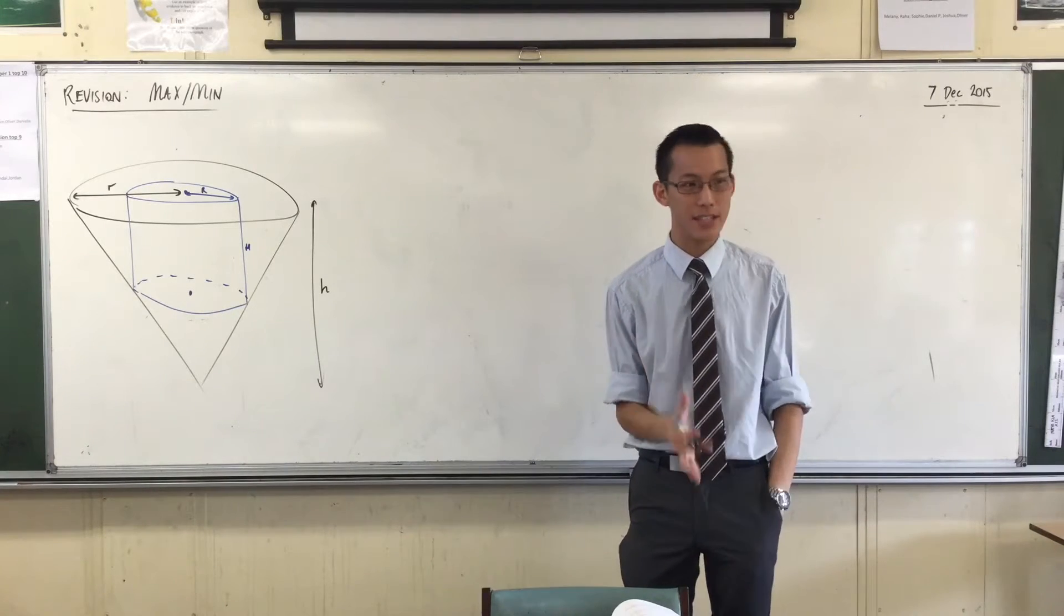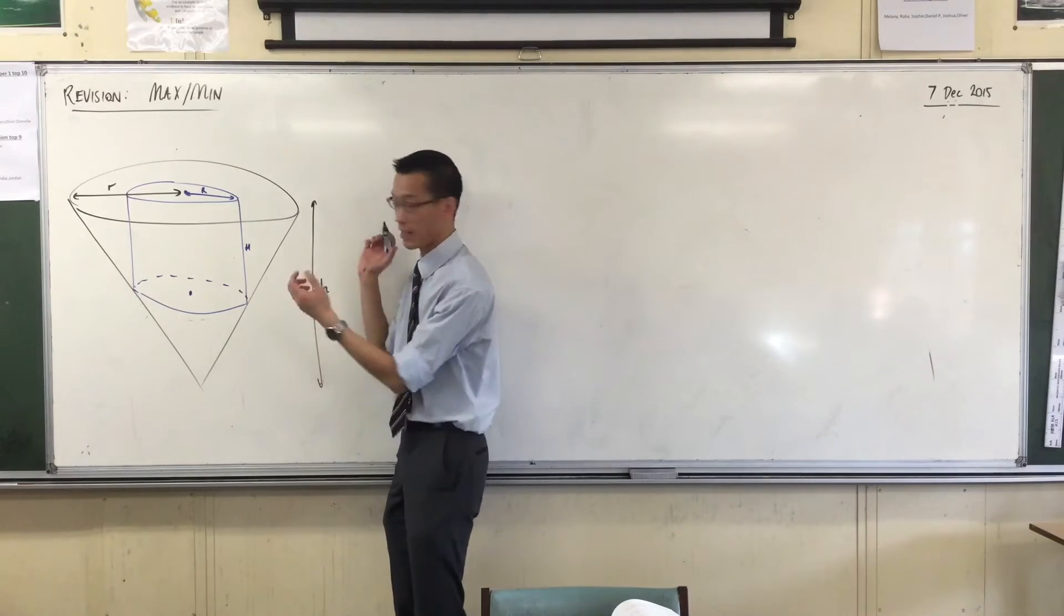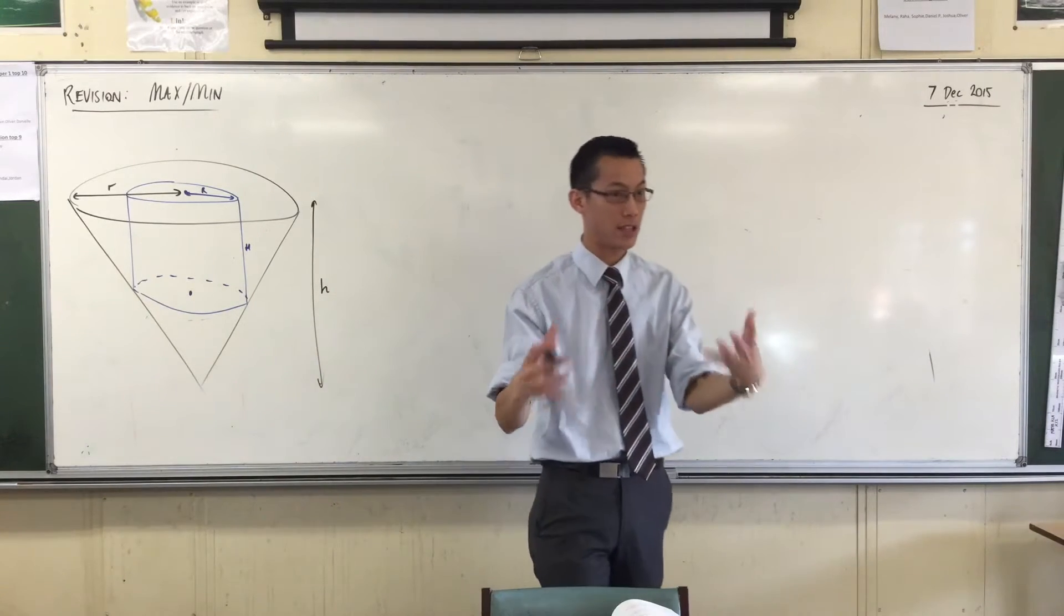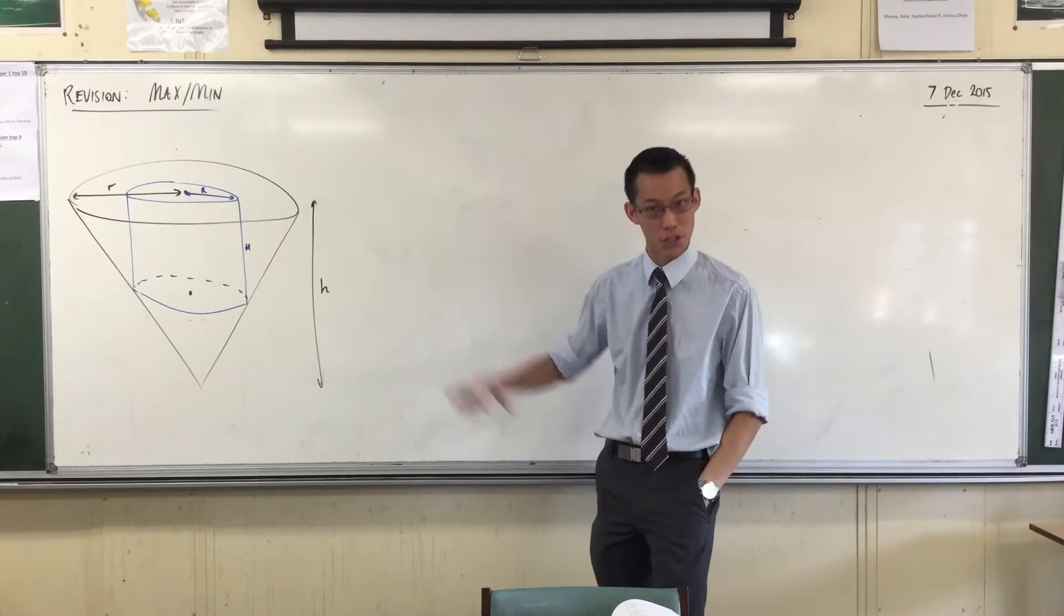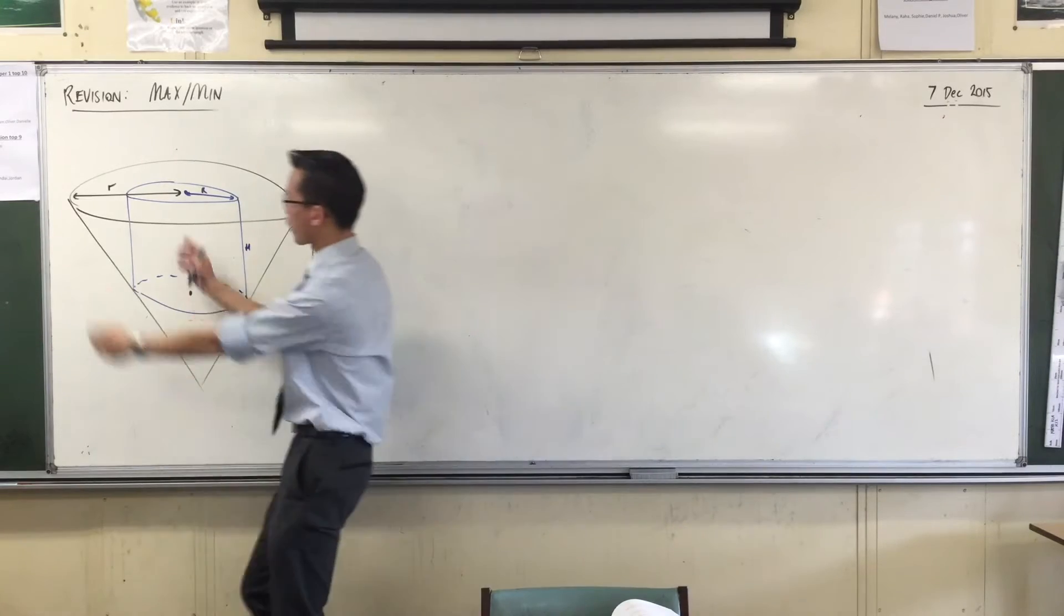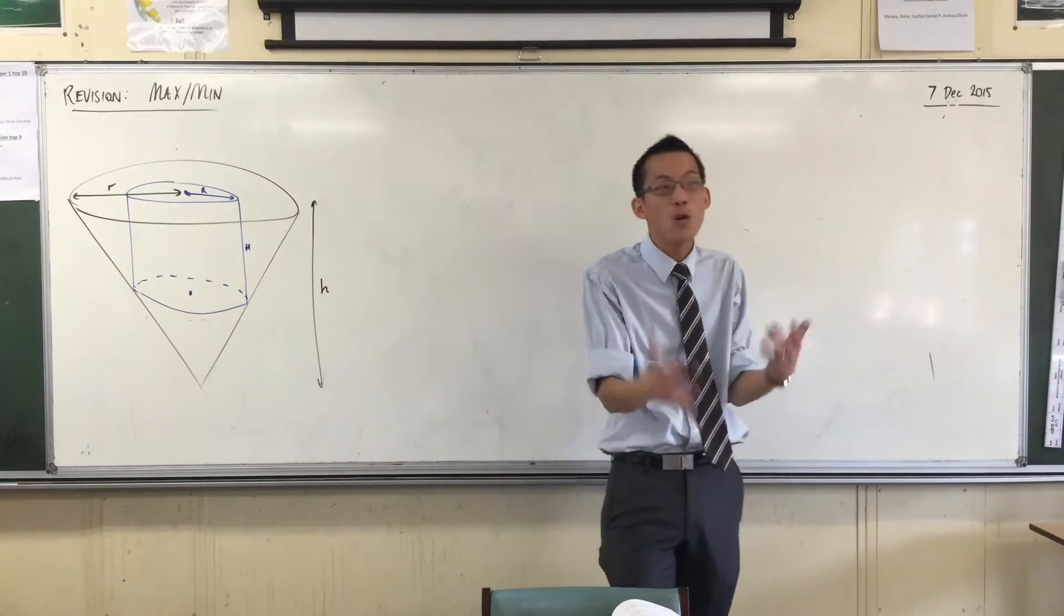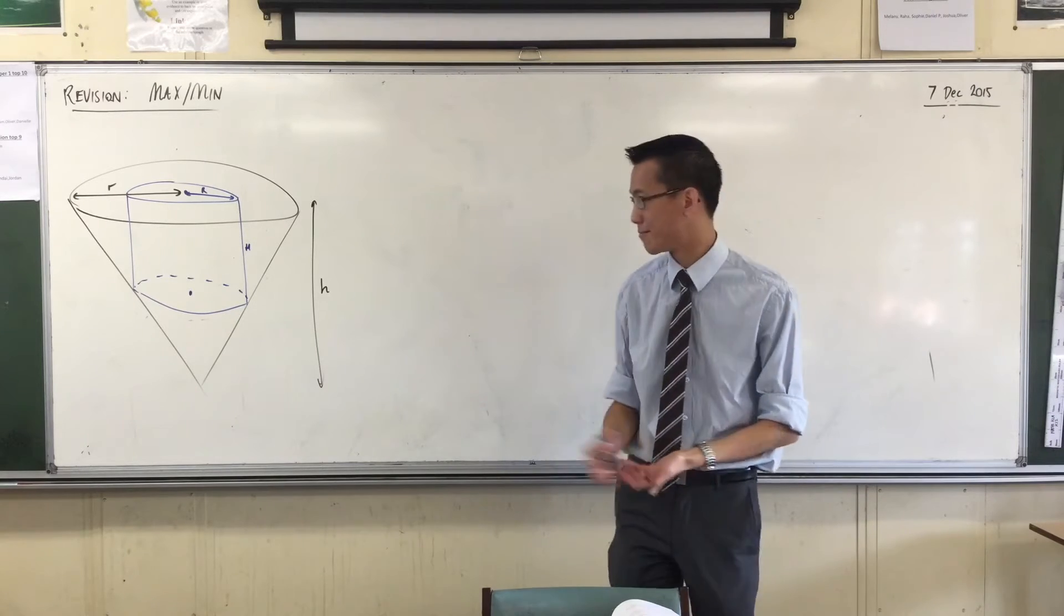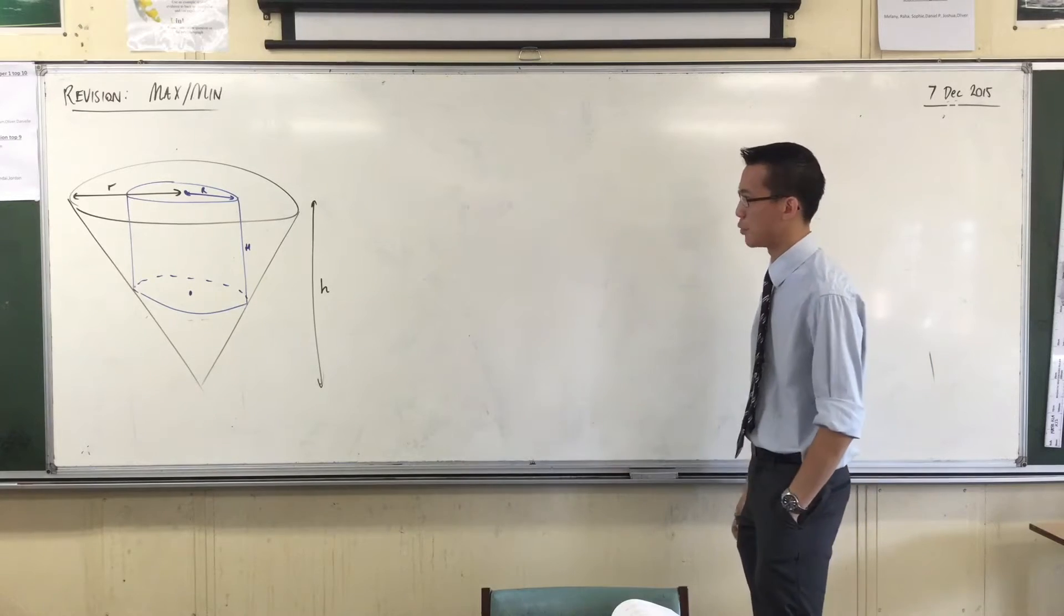And the question very simply is, you have a cone, and it's fixed in size. You don't have any numbers, which is part of what makes this question challenging. For example, it could be a cone of radius 10 centimeters and height 20 centimeters. You often do get numbers for this, but the fact that there aren't numbers is part of the challenge of this question. I'm going to equip you to deal with this.